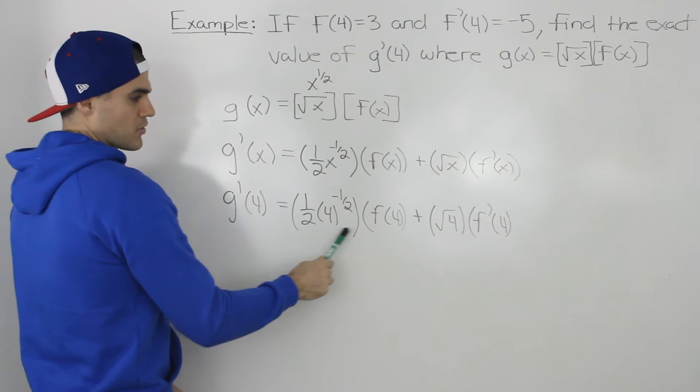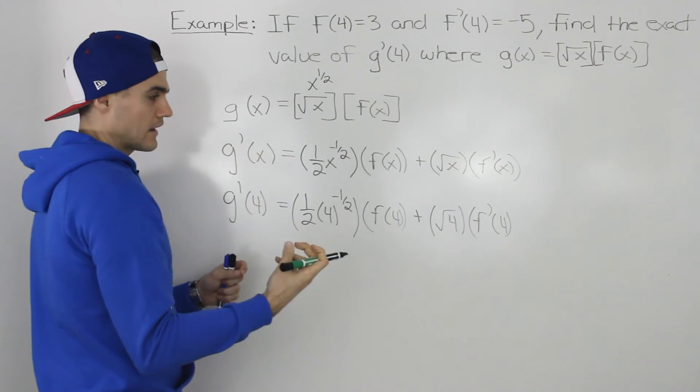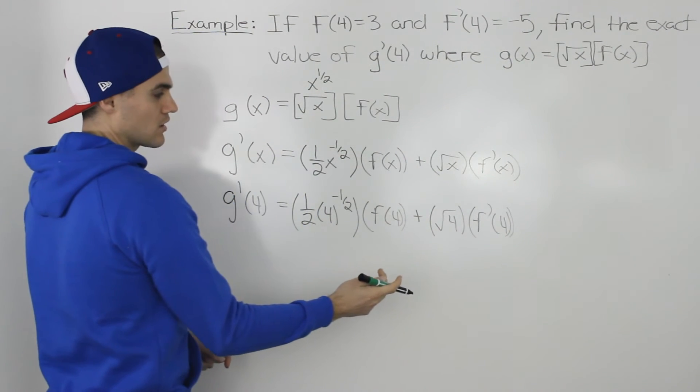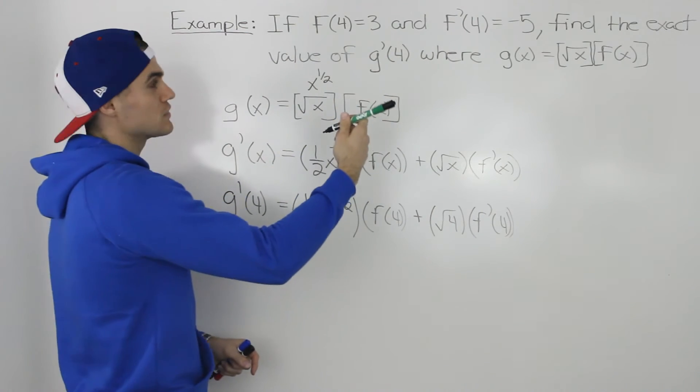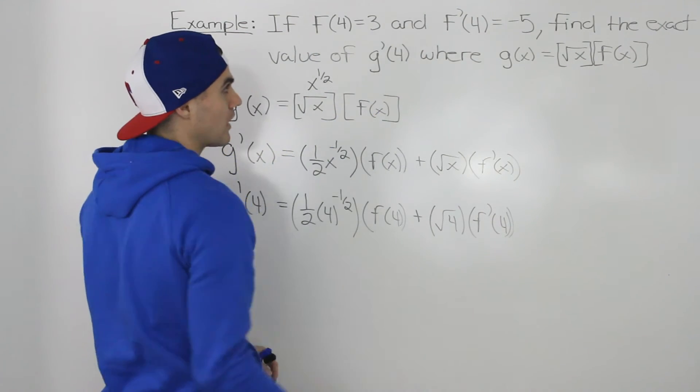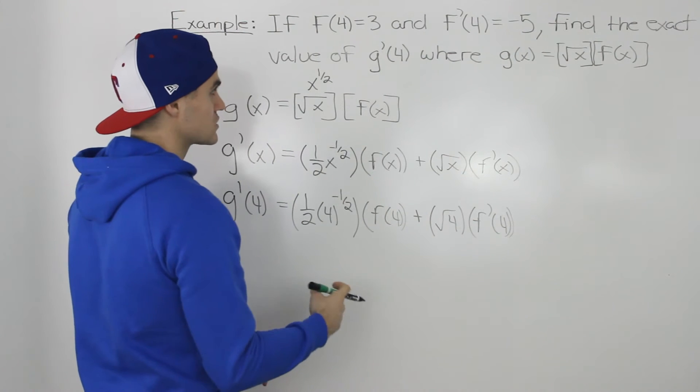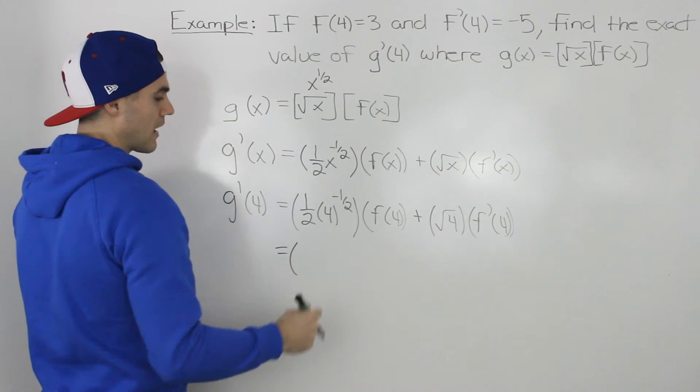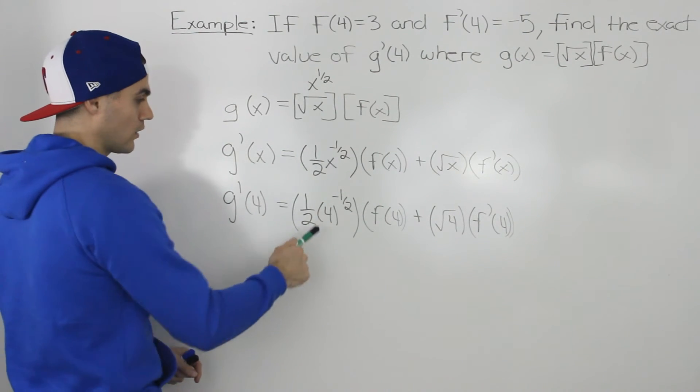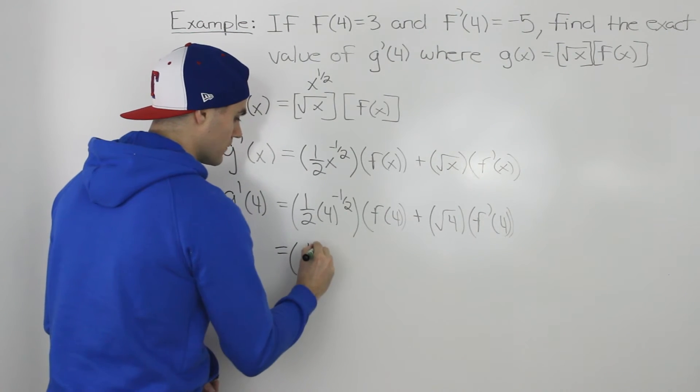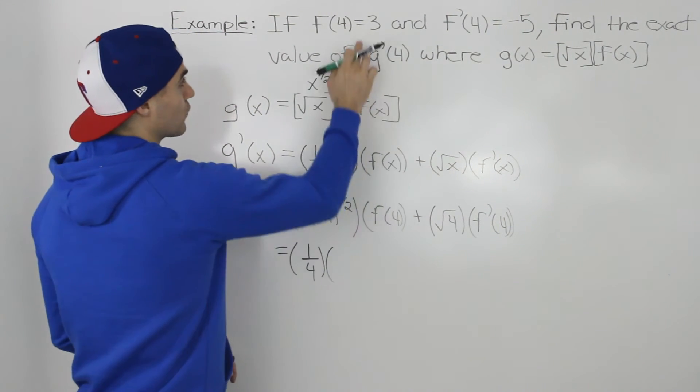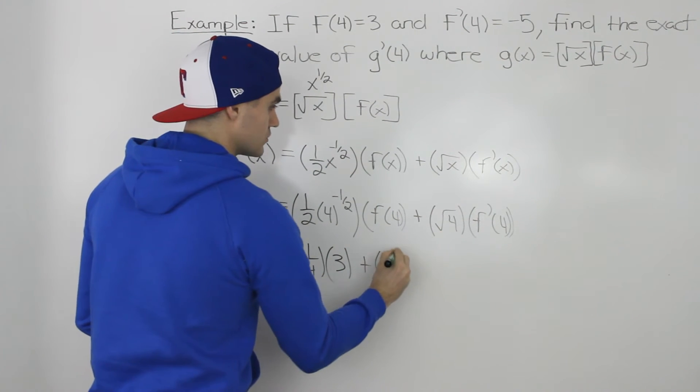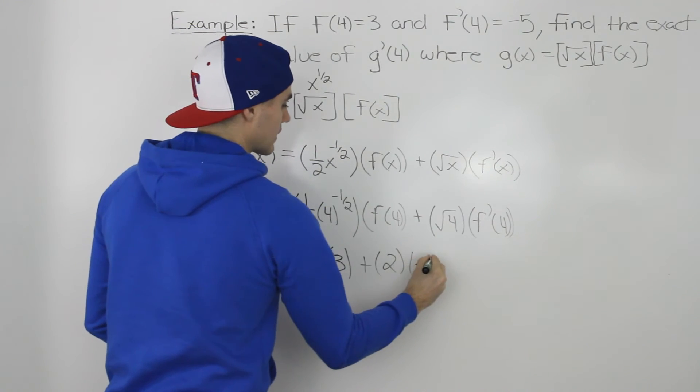If you notice, this bracket and this bracket we can find actual values for, but f(4) and f'(4), we don't know what the actual values of those are. But we are given the values in the question—if you notice, we're given f(4) = 3 and f'(4) = -5. So we can just plug those in here. So this first bracket, 4^(-1/2), that would give us 1/2. One-half times one-half would give us 1/4. So that's the value of the first bracket. f(4) is given as 3, plus the square root of 4 is 2, and then f'(4) is -5.